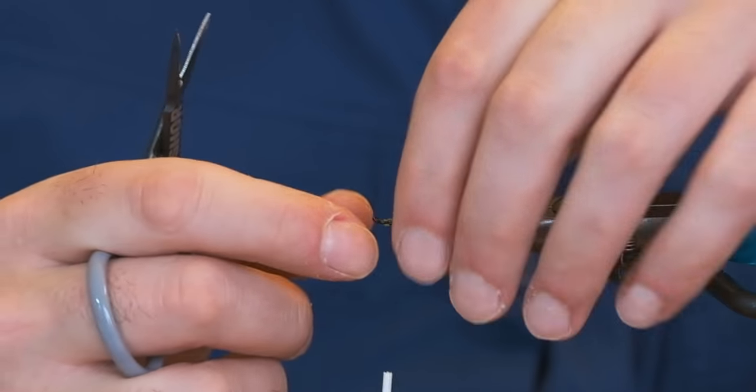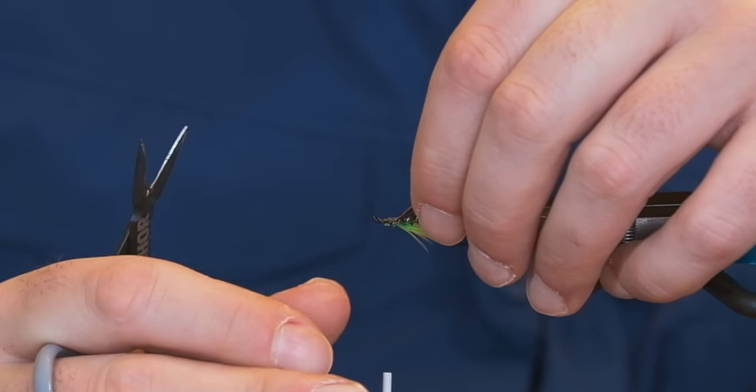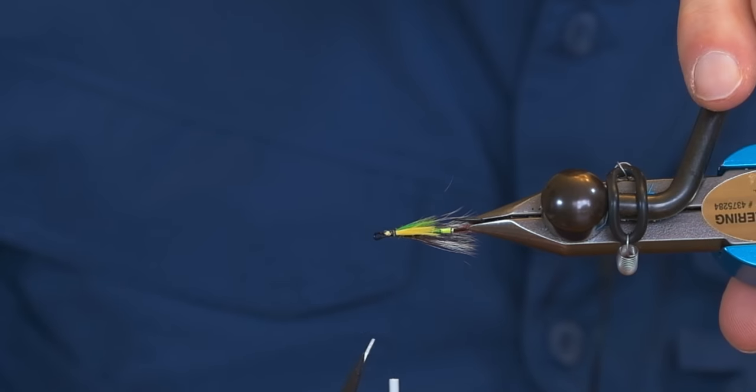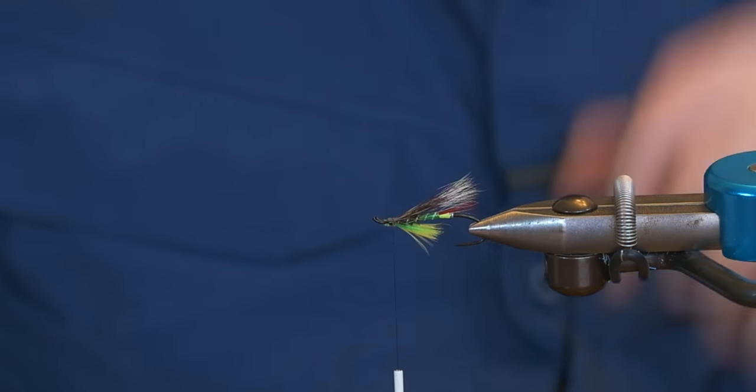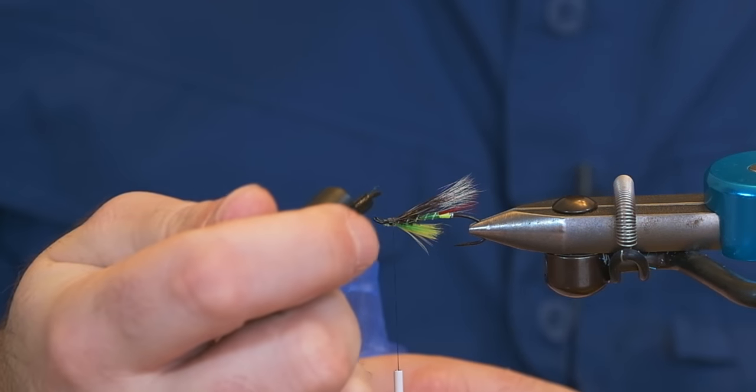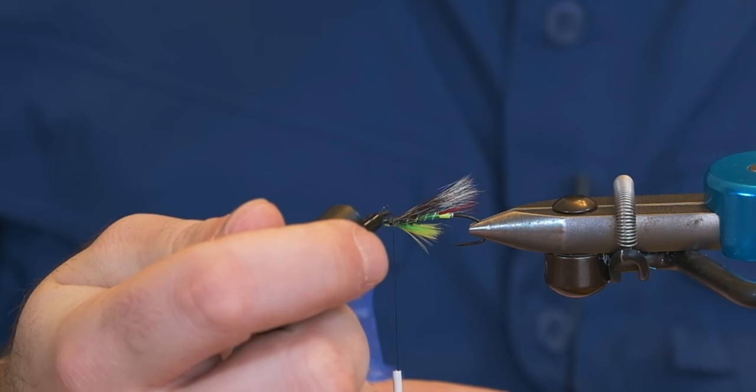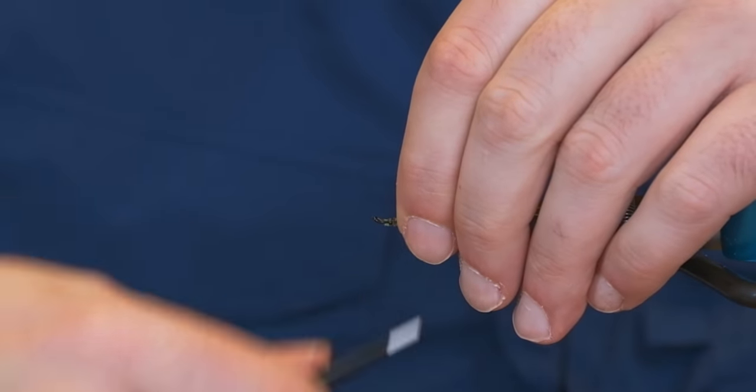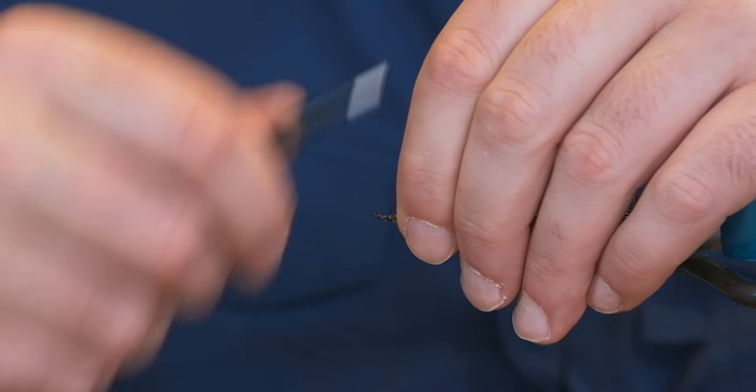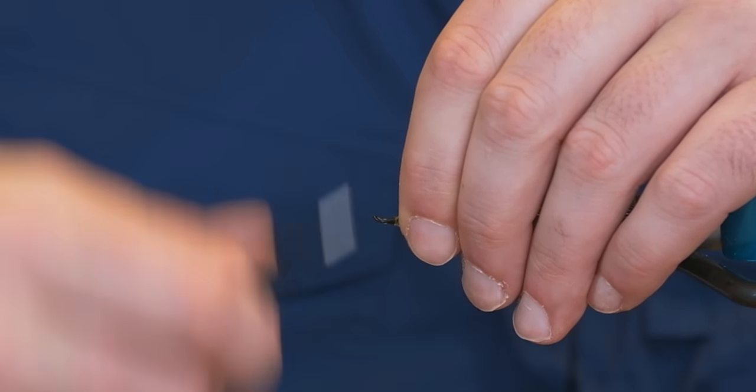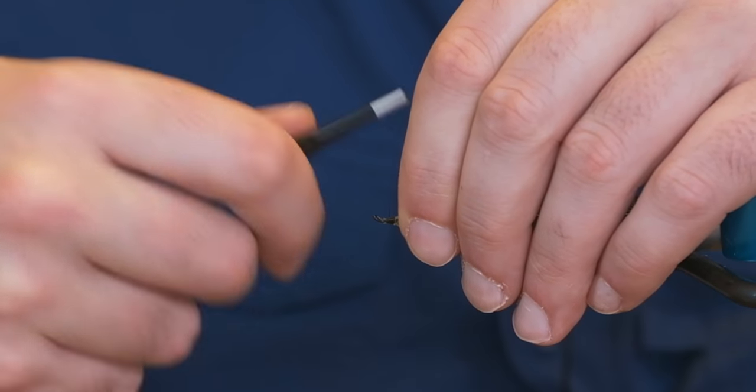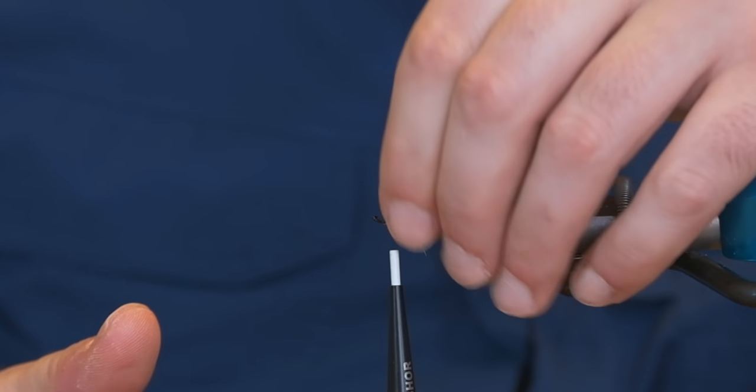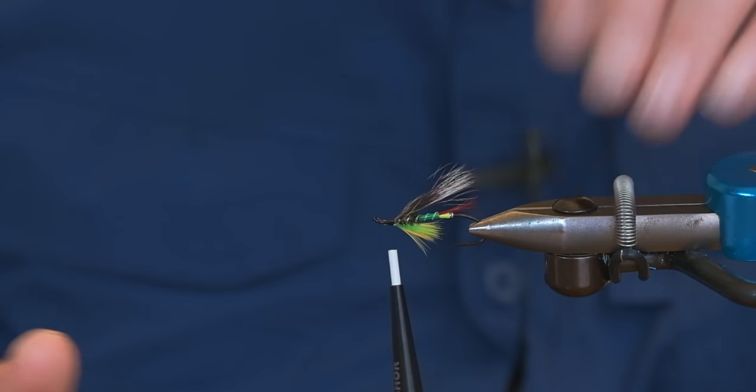Oftentimes I'll break that wing in half by cutting it with the thread and just tying it in in two separate pieces. But no need of that there now. And I always put in a little dab of head cement or Loctite. And basically that turns your fly into a bulletproof fly. The wing won't pop out.